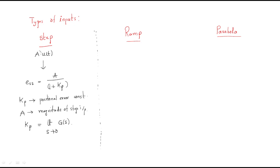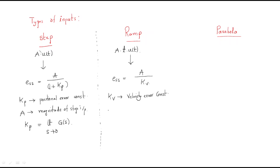The ramp input signal is a·t·u(t). The steady-state error formula for ramp input is: SSE = a / Kv, where Kv is the velocity error constant. The formula for Kv is: Kv = lim(s→0) s·G(s). Here 'a' is again the magnitude, and s is multiplied in the limit expression.